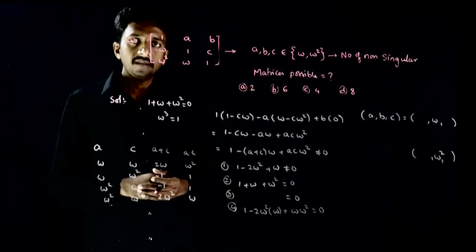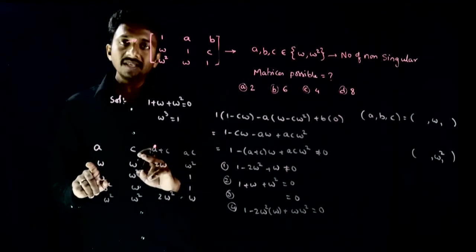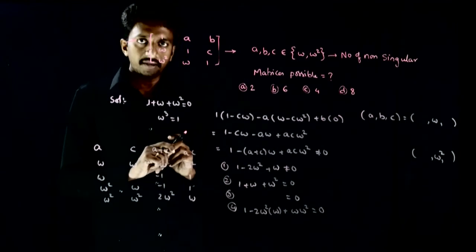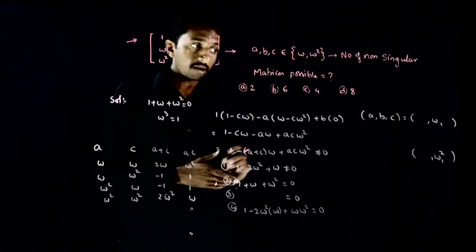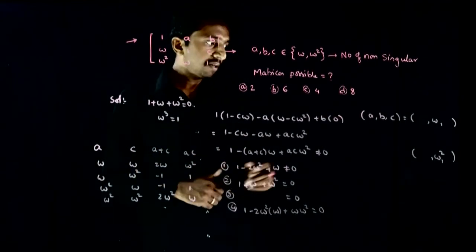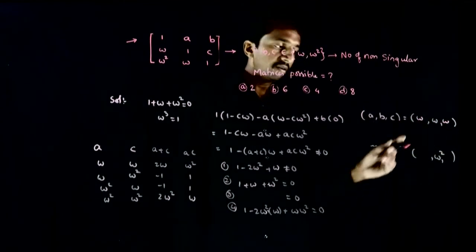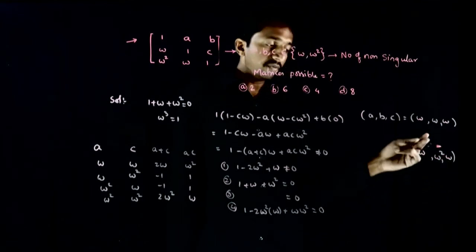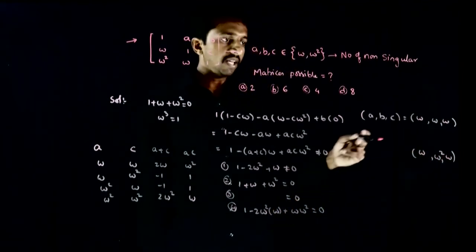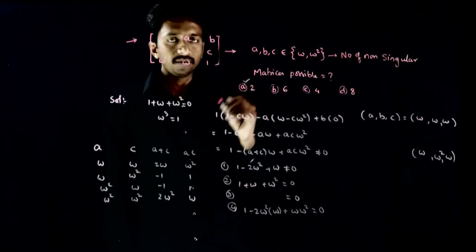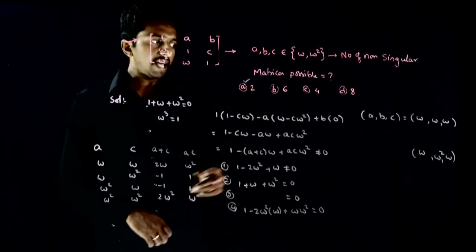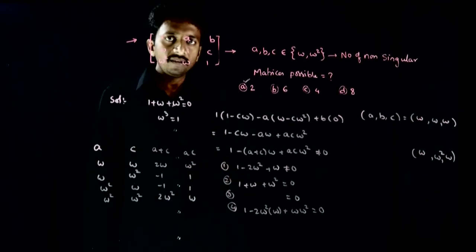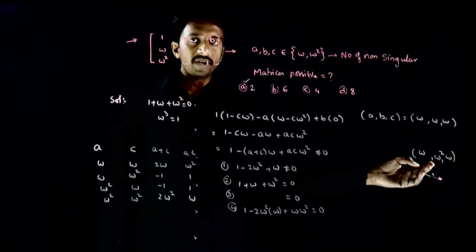There is only one valid case: a = ω and c = ω. Only then will the matrix be non-singular. Since b can be ω or ω², we have two possible ordered triplets (a, b, c): one is (ω, ω, ω) and the other is (ω, ω², ω). So the answer is 2.